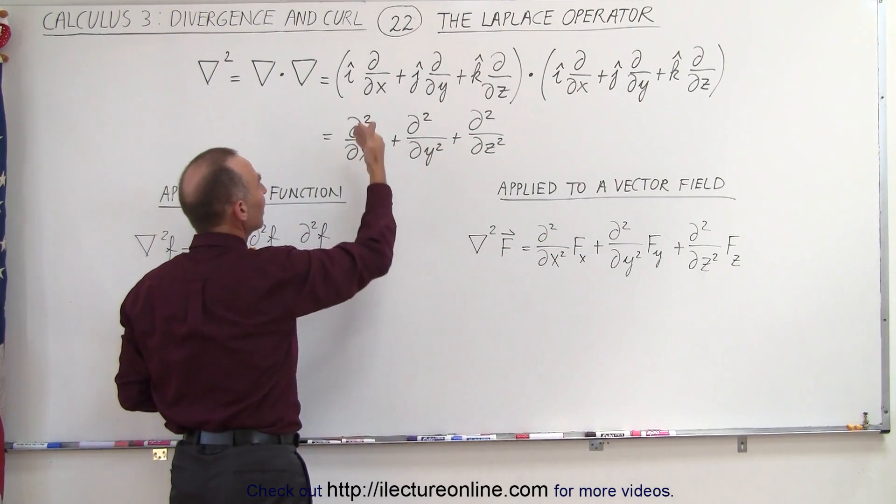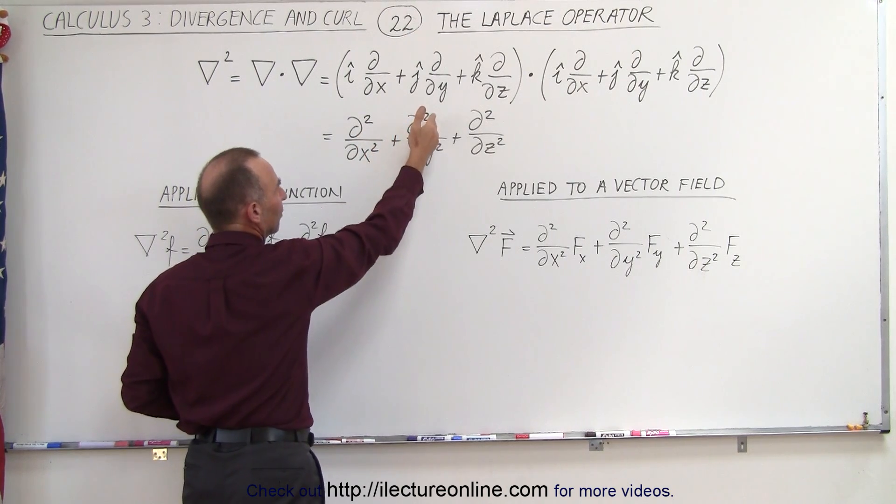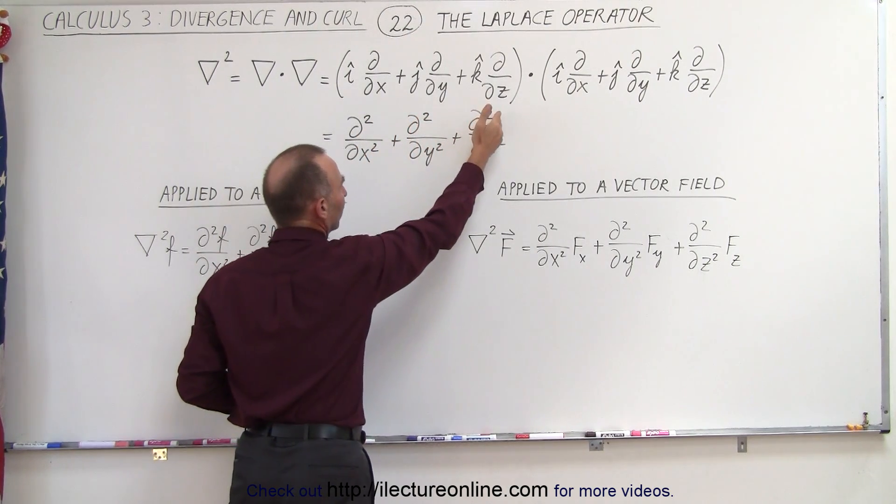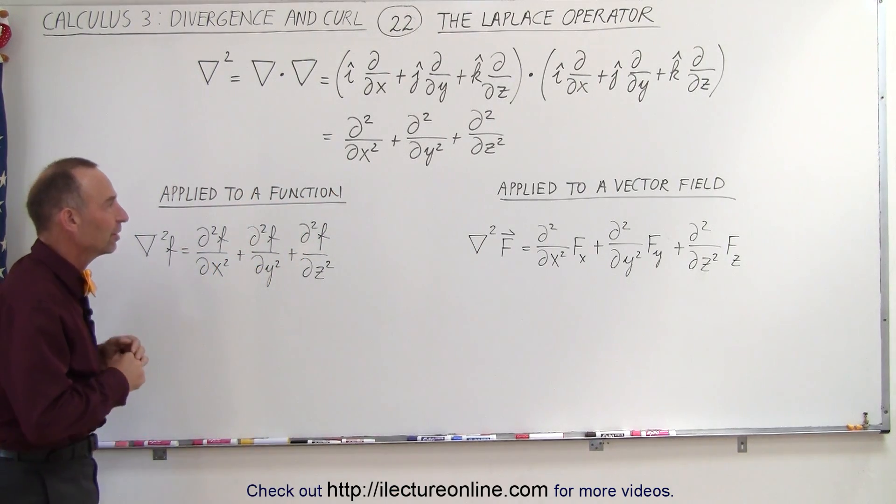which in essence becomes the second derivative with respect to x squared plus the second derivative with respect to y squared plus the second derivative with respect to z squared, which of course are partial derivatives.